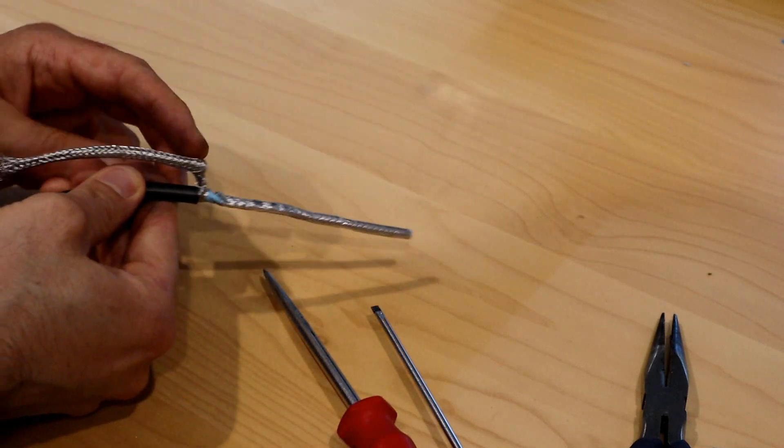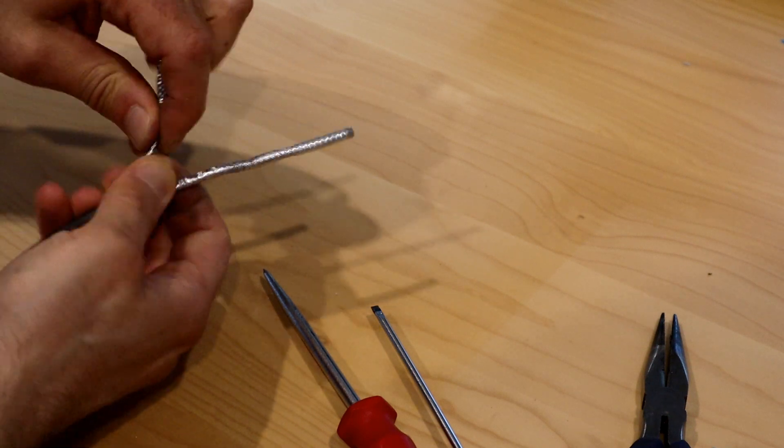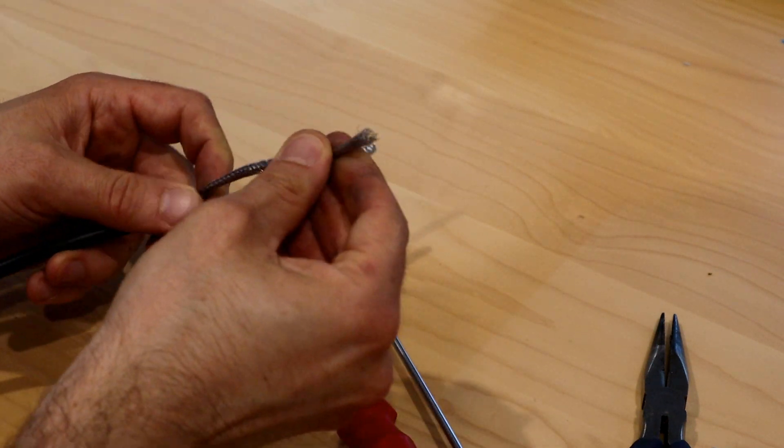Straighten out the braid. You can put a heat shrink around if insulation is required. This gives it also a little bit more mechanical strength.